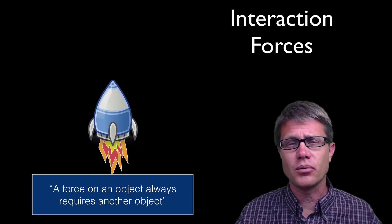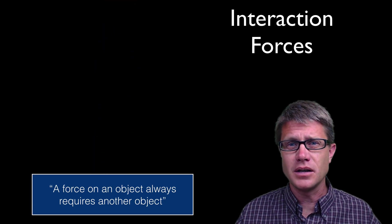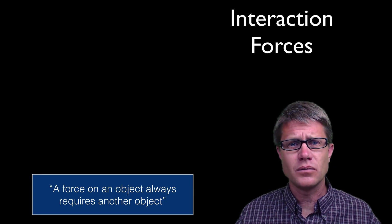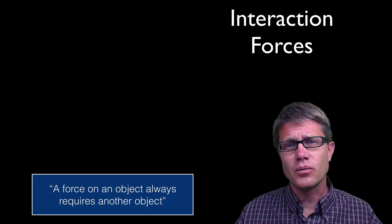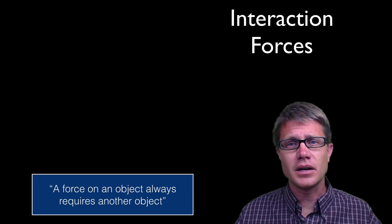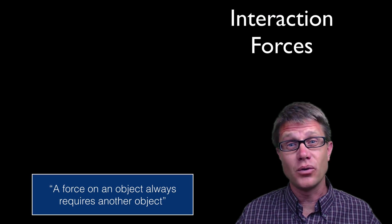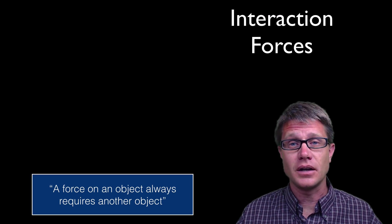Let's make it a little more difficult. If we see a rocket accelerating through space there must be another object. But we do not see one. What is it? It is actually the rocket fuel. And so as the rocket applies a force on the fuel in one direction, the fuel applies an opposite and equal force in the other direction causing it to accelerate.